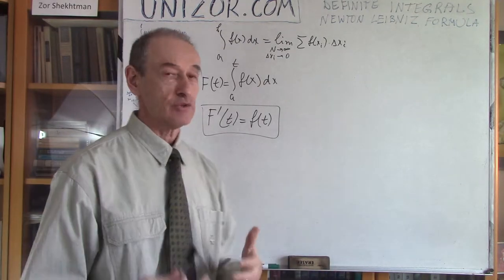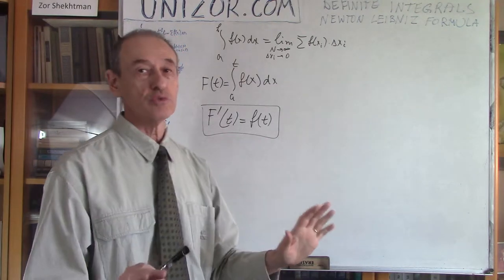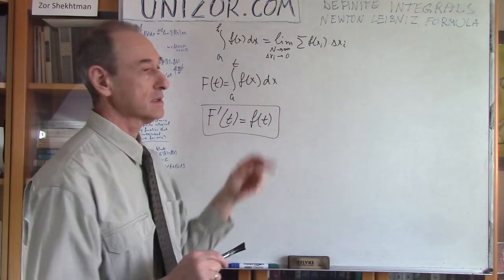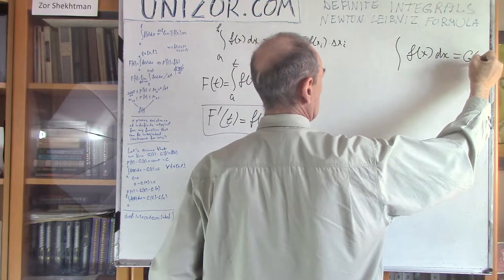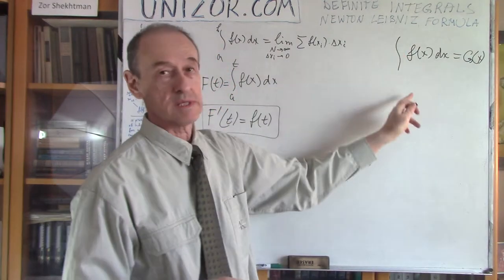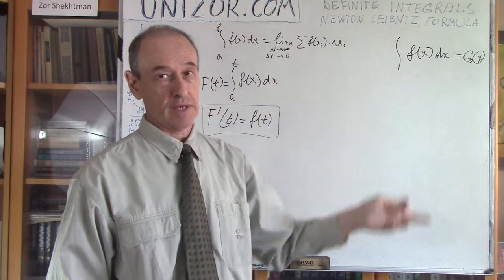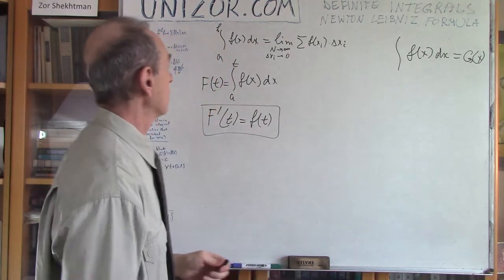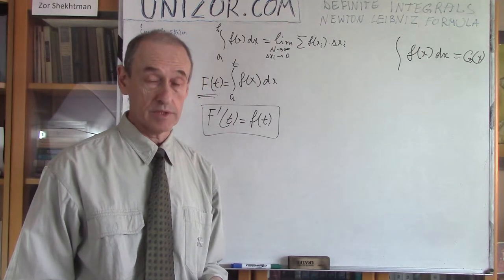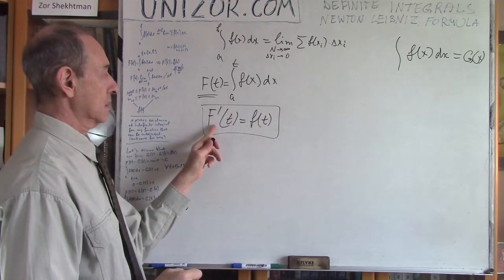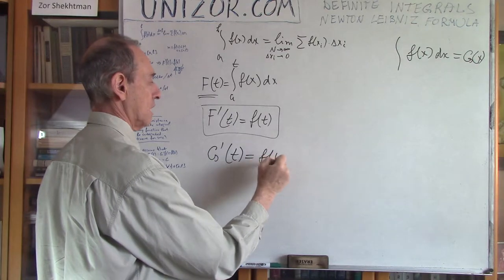Let's assume for a second that we know how to find an indefinite integral — or antiderivative — of f(x). So g(x) is the antiderivative of f(x). I also know that F(t) is an antiderivative, because its derivative equals f(t). So both g(t) and F(t) have derivative equal to f(t).